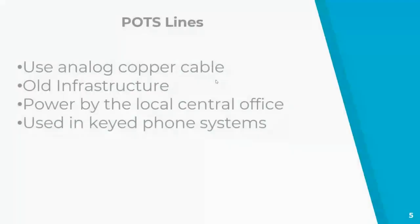The first one I'd like to start with is good old POTS lines. POTS is short for plain old telephone service and refers to a standard landline telephone service that has been in place for many decades. We typically see these in small businesses that only have a few telephones and a few telephone lines needed — a good example would be a small doctor's office. These older systems use POTS lines and are referred to as keyed systems, with line one, line two, and so on, using a feature called rollover. If line one is busy, it rolls over to the second, the third, and so forth.